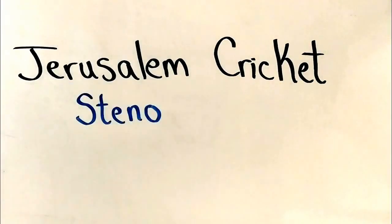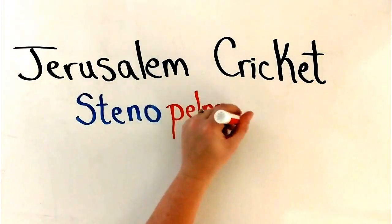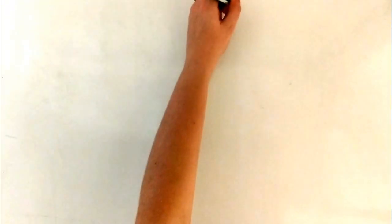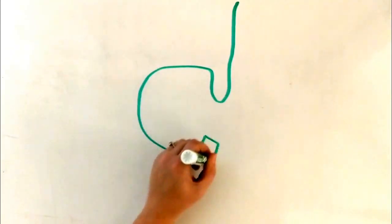Jerusalem crickets are in the genus Stenopelmatis, which means narrow feet in Greek. They can be found in the southwestern United States and down into Central America.